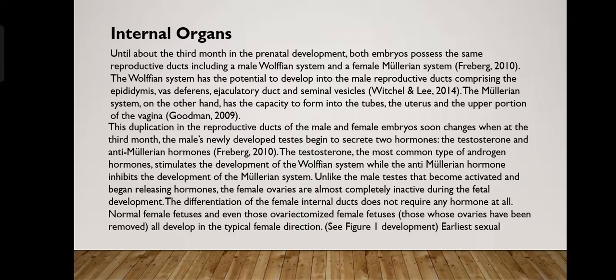Second, we have the internal organs. Until about the third month of prenatal development, both embryos possess the same reproductive ducts, including the male Wolffian system and the female Müllerian system. Internal organs include the heart, liver, lungs, brain, eyes, stomach, kidneys, and many more. For females, the internal reproductive system includes the ovary, vagina, cervix, and fallopian tubes. For males, it includes the testicles, urethra, penis, vas deferens, and bladder.